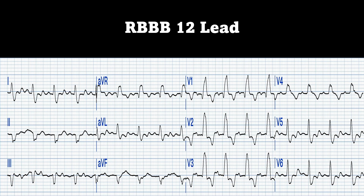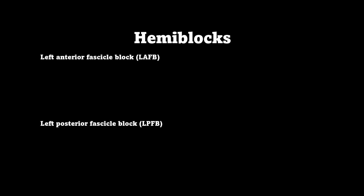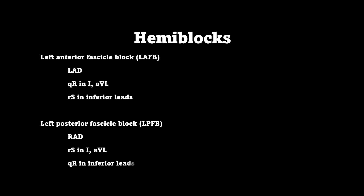Now we'll talk about hemi blocks — blocks in the fascicles that branch off from your left bundle branch. You can have a left anterior fascicular block or a left posterior fascicular block. The left anterior fascicular block is more common; it presents with left axis deviation, a small Q wave followed by a prominent R wave in leads I and AVL, and a small R with a big S wave in the inferior leads (II, III, and AVF). The posterior fascicular block presents with right axis deviation, a small R and big S in lead I and AVL, and a small Q with a large R in the inferior leads.